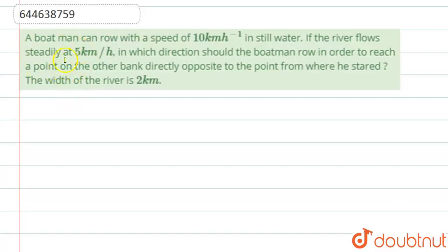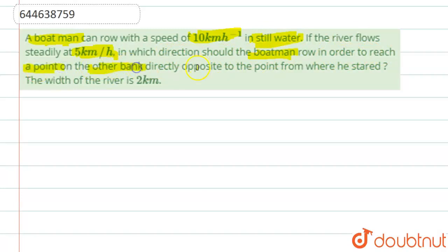We're going to see this question: a boatman can row with a speed of 10 kilometers per hour in still water. If the river flows steadily at 5 kilometers per hour, then in which direction should the boatman row the boat in order to reach a point on the other bank directly opposite to the point from which he started?